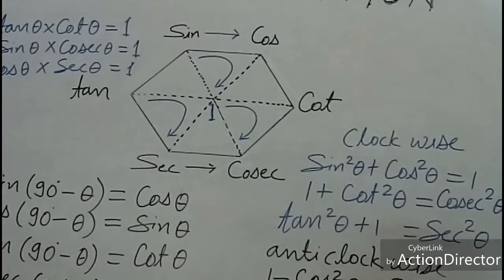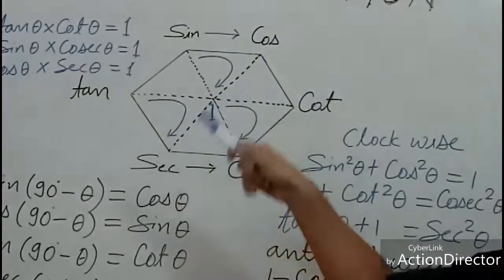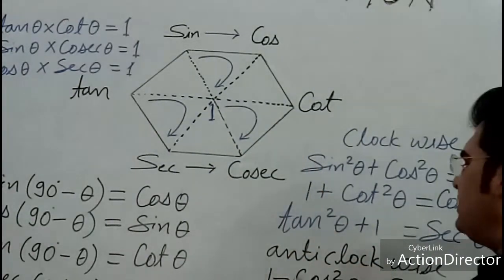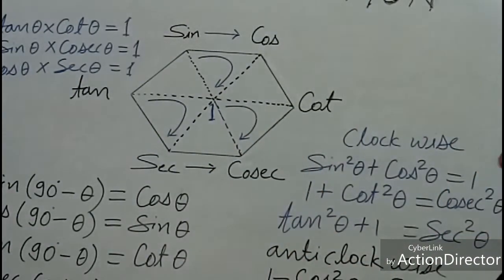Once you get these three, then you can get other three. You can get them by transposing here, or you can take these arrows anti-clockwise. In anti-clockwise you can get one minus cos square theta...